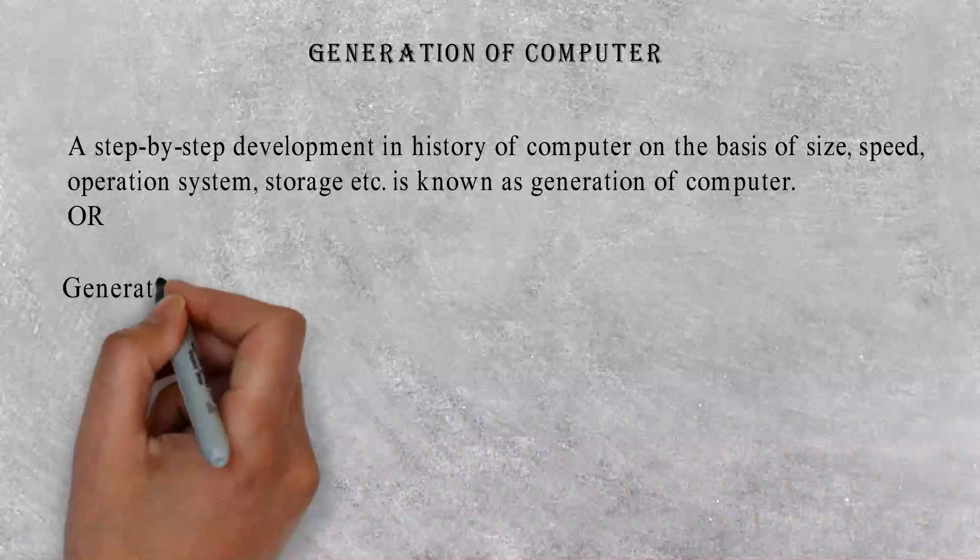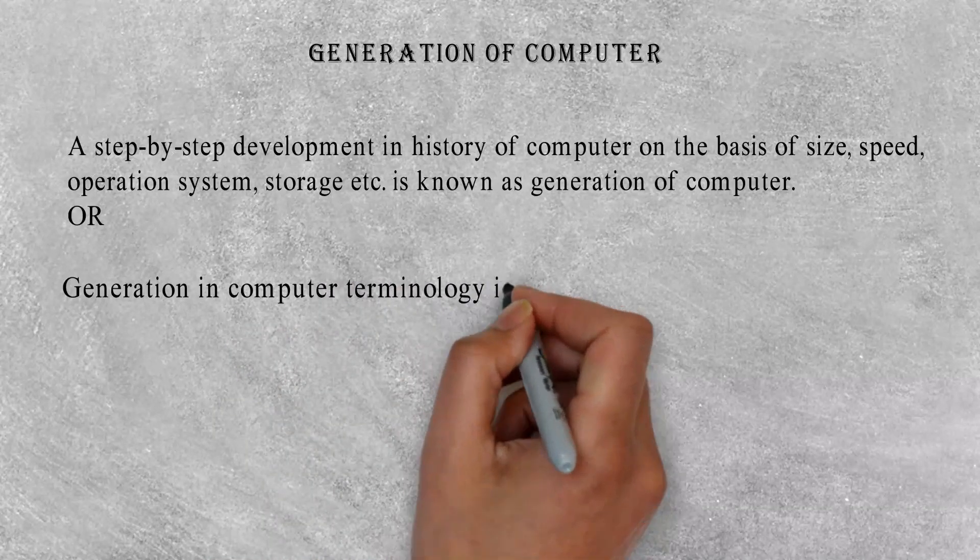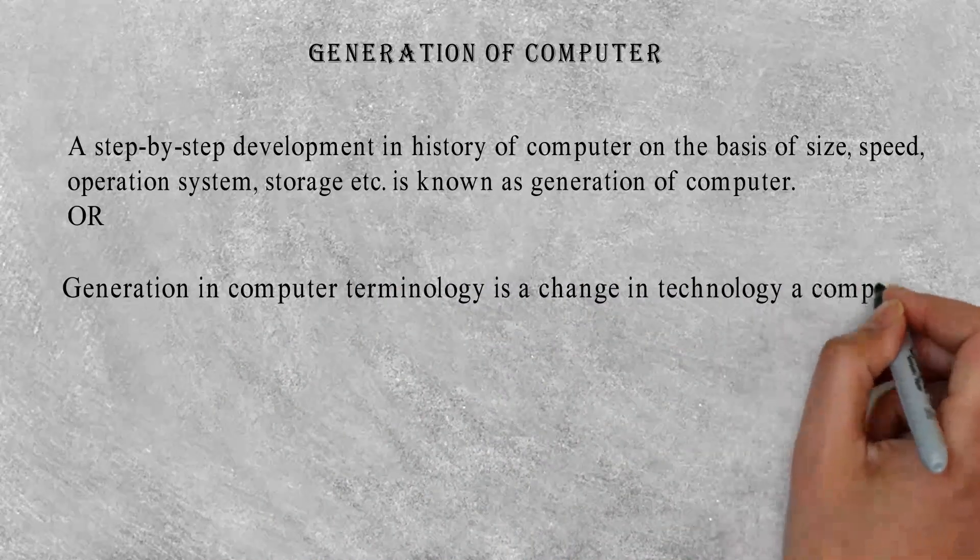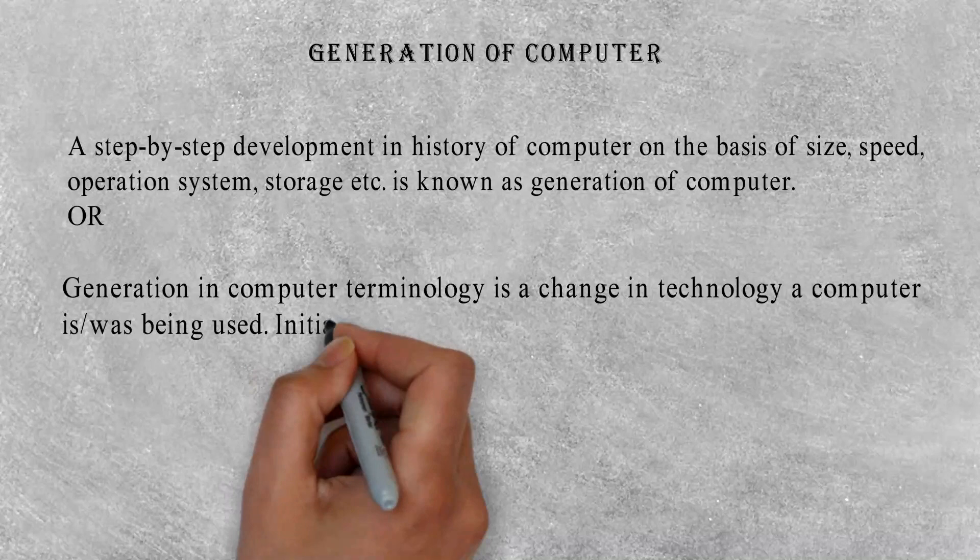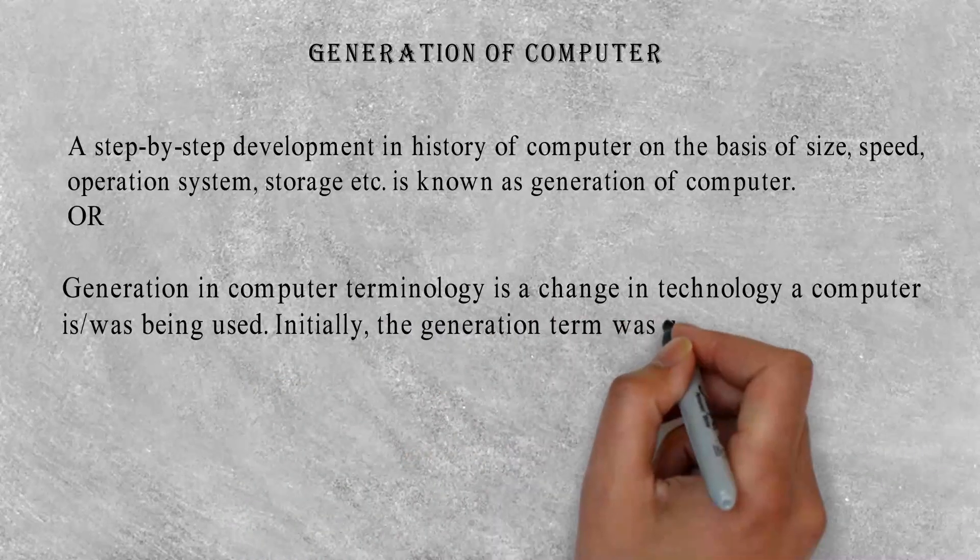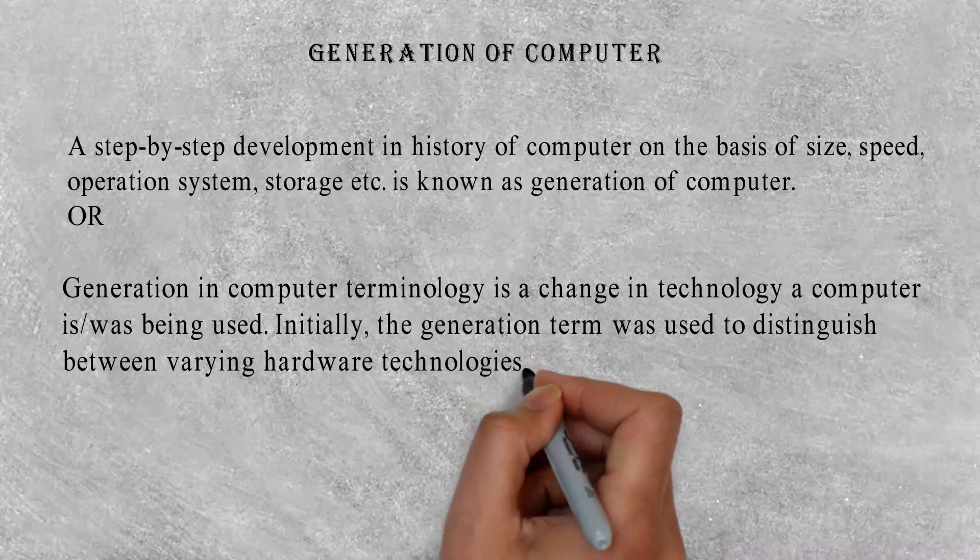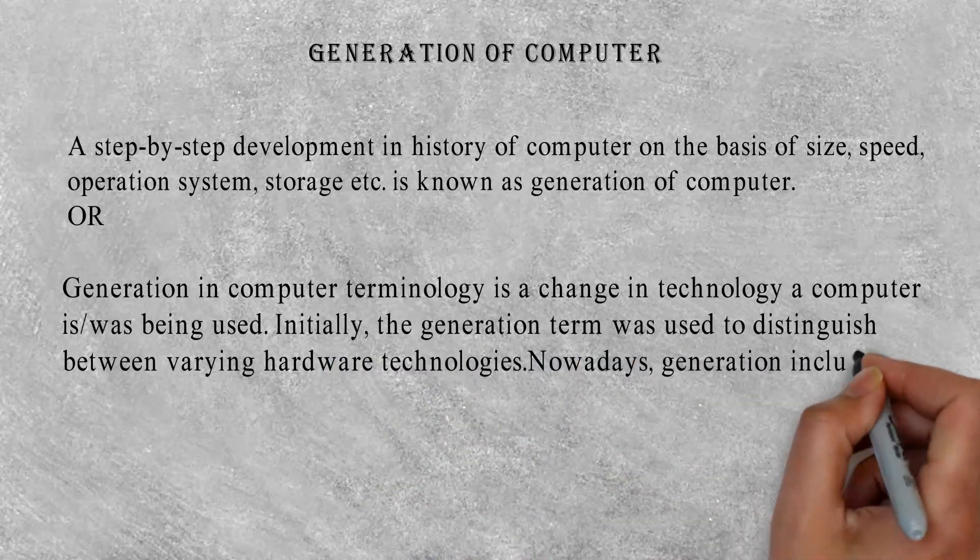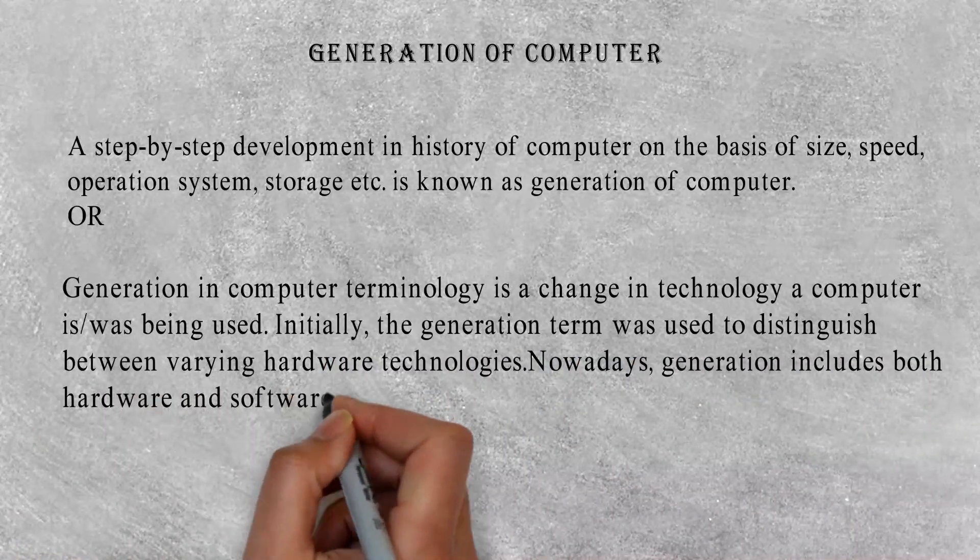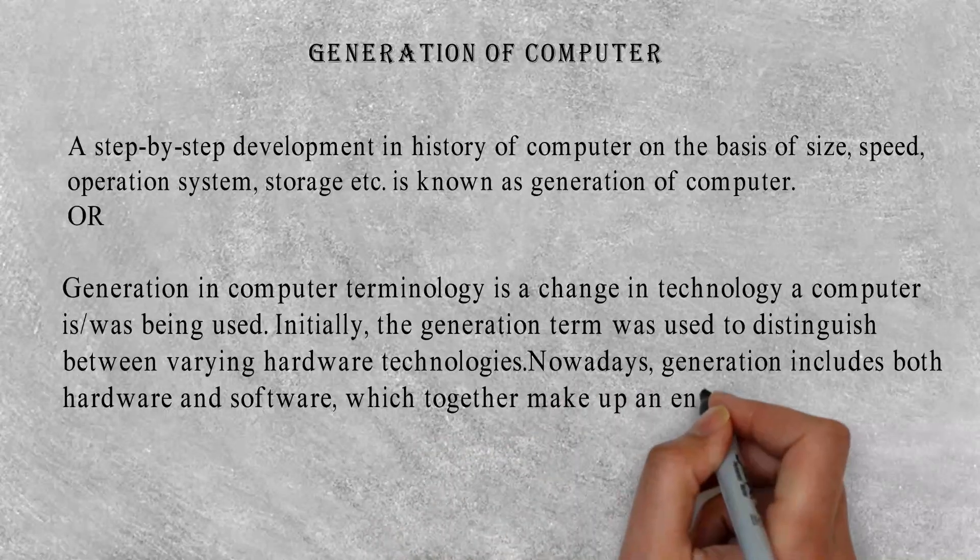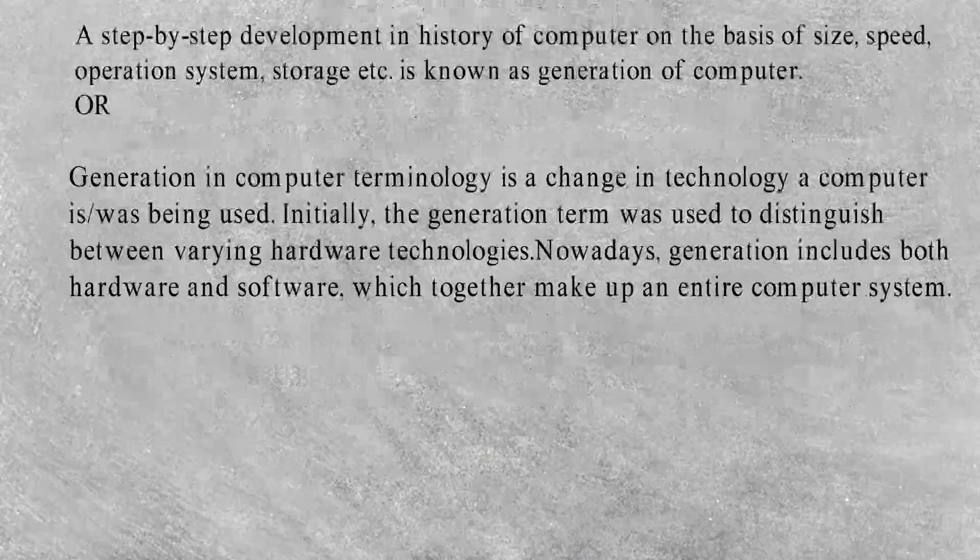Or, generation in computer terminology is a change in technology a computer is or was being used. Initially, the generation term was used to distinguish between varying hardware technologies. Nowadays, generation includes both hardware and software, which together make up an entire computer system.